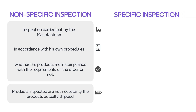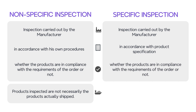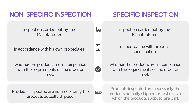Specific inspection is an inspection carried out by the manufacturer in accordance with product specification, whether the products are in compliance with the requirements of the order or not. Products inspected are necessarily the products actually shipped, or test units of which the products supplied are part.